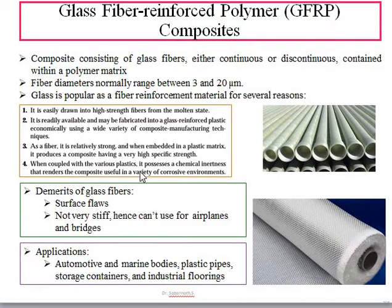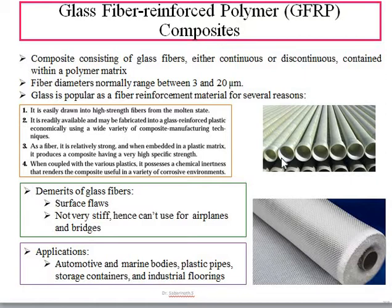When coupled with various plastics, glass fiber poses chemical inertness, which is one of its important features. In many industries, like refineries, chemical products, as well as water pipelines, are made from this material so that it can be widely used in corrosive environments. Especially in seashore areas where freshwater lines are circulated, this type of glass fiber pipe is used.